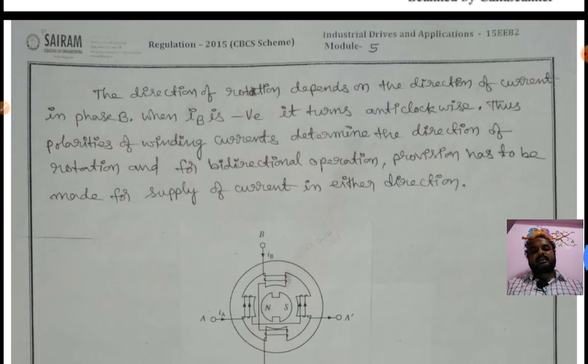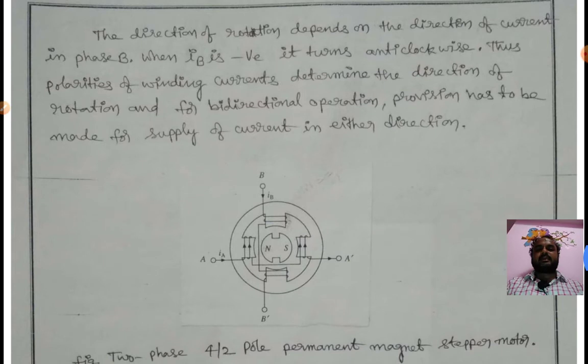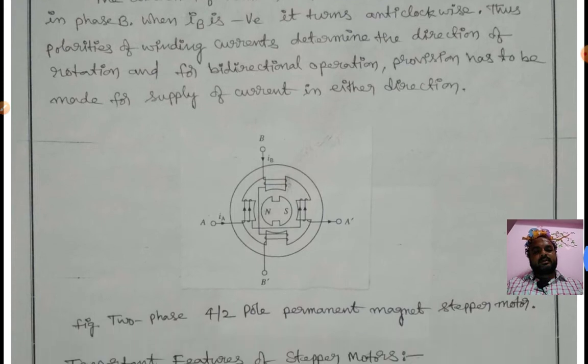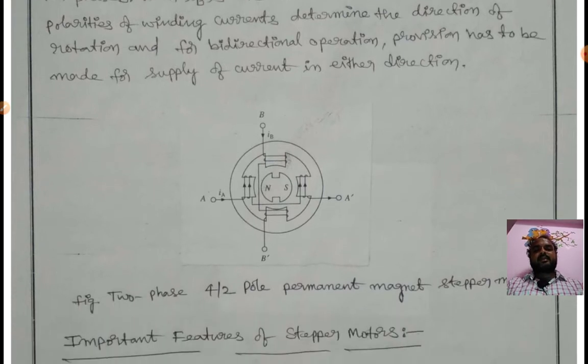The direction of rotation depends on the direction of current in phase B. When IB is negative, it turns anti-clockwise. Thus, polarities of winding currents determine the direction of rotation. For bidirectional operation, provision has to be made for supply of current in either direction.